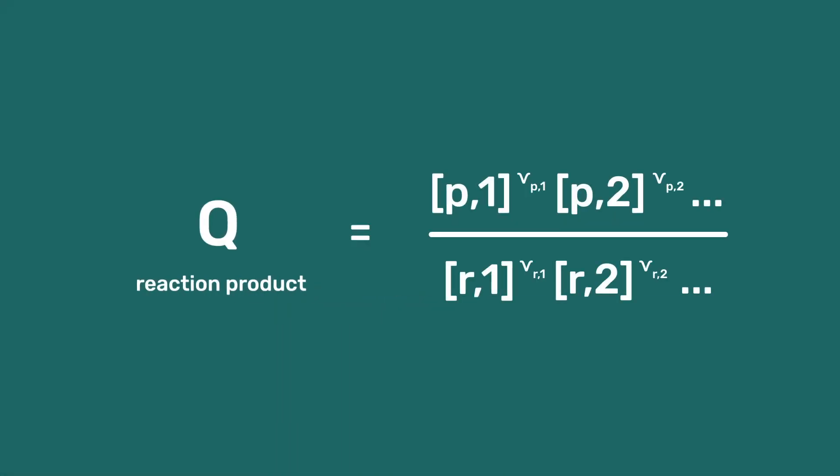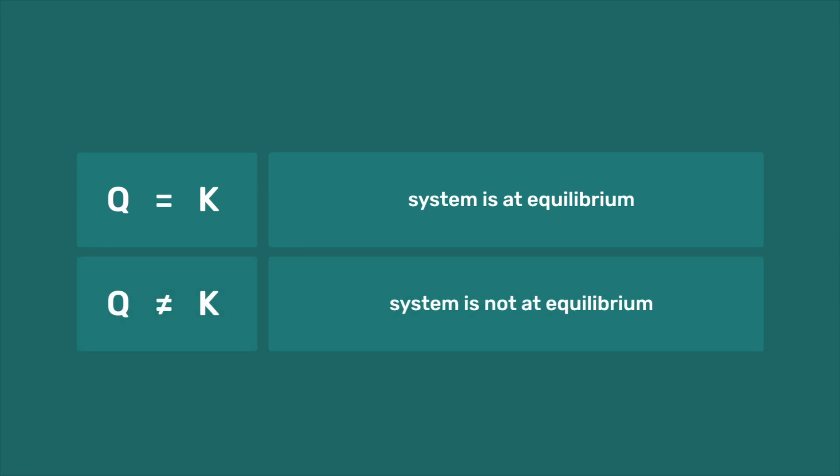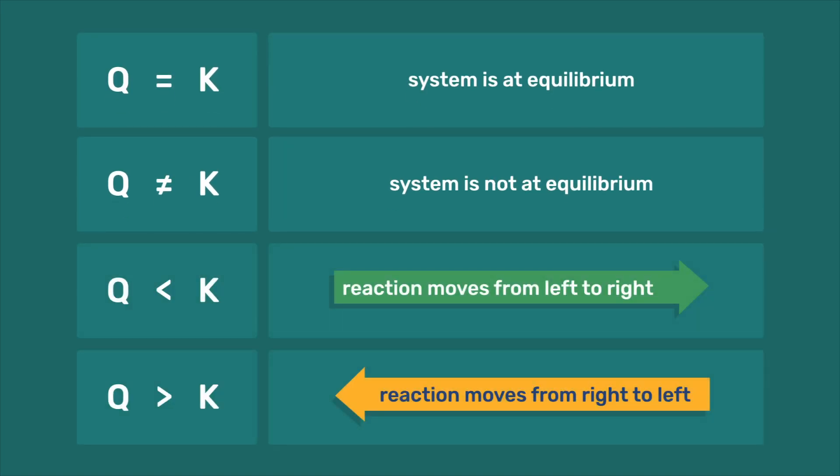Calculating Q from the concentrations available in solution and comparing the obtained value to K indicates if the system is at equilibrium, or, if not, in what direction the reaction should proceed.